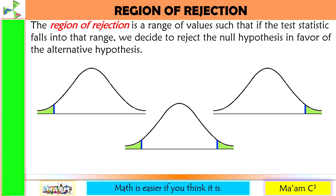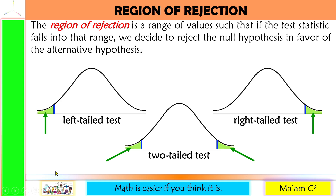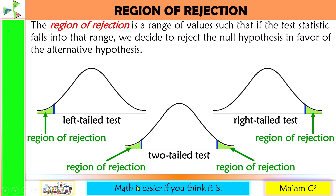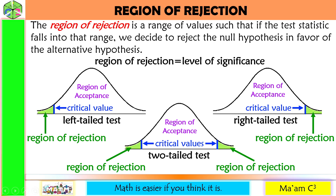Let us talk about the region of rejection. The region of rejection is a range of values such that if the test statistic falls into that range, we decide to reject the null hypothesis in favor of the alternative hypothesis, because this is the area where the null hypothesis is not probable. We have three types: the left-tailed test, right-tailed test, and the two-tailed test. The shaded area is called the region of rejection, the unshaded area is the region of acceptance, and the blue lines are the critical values. The region of rejection equals alpha for a one-tailed test, and alpha over 2 for a two-tailed test.